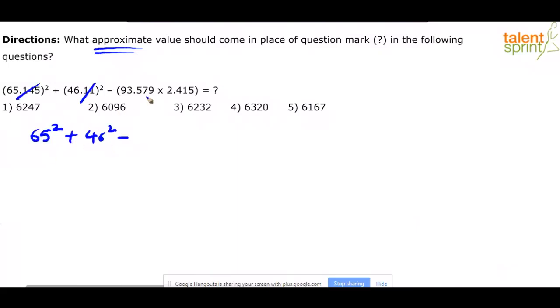Then look at the last part: 93.579 into 2.415. I have told you, if you have gone to the approximations video, you would know that when you are multiplying two numbers A and B, and when you want to do an approximation, you should always, if you want to do changes in both the numbers, always increase one number and decrease the other one.